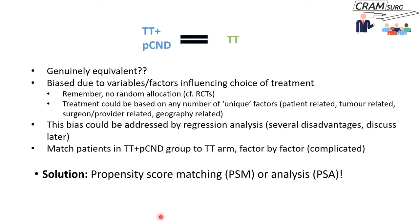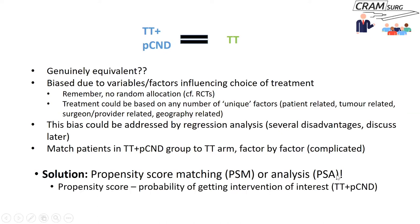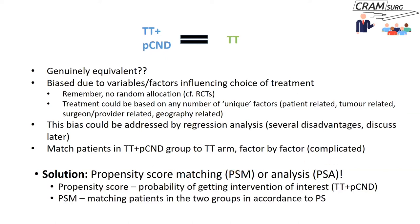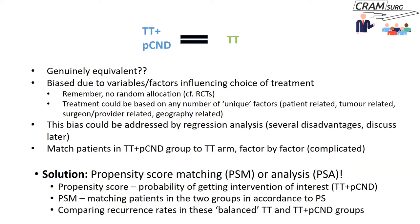The solution is propensity score matching, or propensity score analysis. The word 'propensity score' simply means the probability of getting allocated to or having had the intervention of interest — in this case, neck dissection along with thyroidectomy. The 'matching' in propensity score matching is where you try to balance out the various confounding factors in the two arms, and once balanced, you compute the treatment effect in these balanced groups.